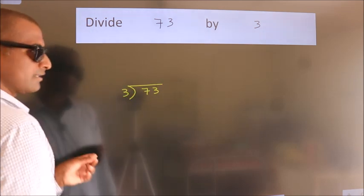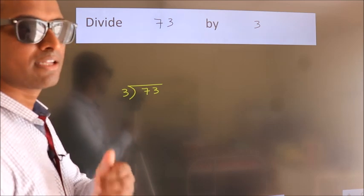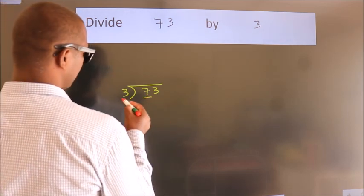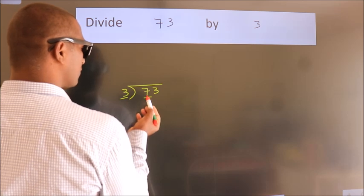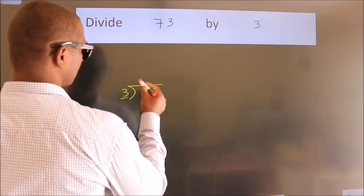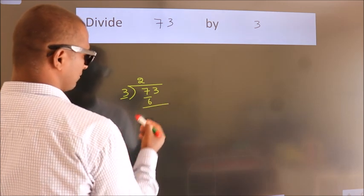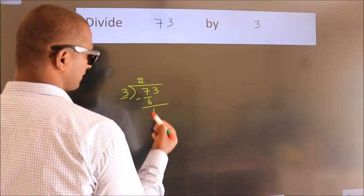This is step 1. Next, here we have 7, here 3. A number close to 7 in the 3 table is 3 times 2 equals 6. Now, we subtract and get 1.